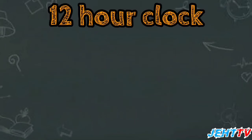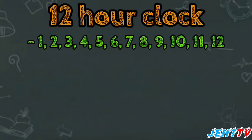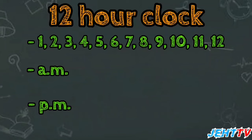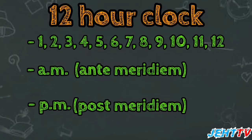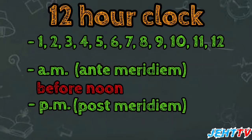For the 12-hour clock system, we use the numbers 1 through 12. Besides that, the 12-hour clock system consists of AM and PM. What does AM mean? It means ante-meridiem, which is a Latin word. And PM means post-meridiem. So, ante-meridiem means before noon, and post-meridiem means after noon.